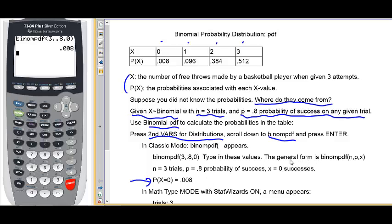The general form for this function is binomial pdf npx. n is the number of trials. p is the probability of success on any given trial. And x is the number of successes that you're looking for the probability of at the moment. So, there's the first entry in the table.